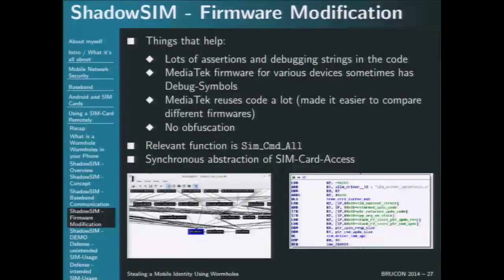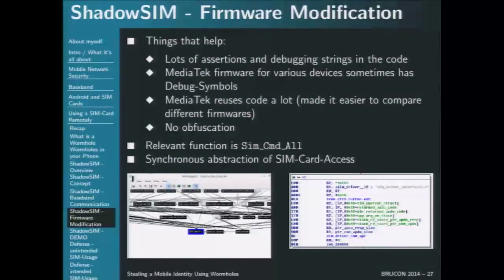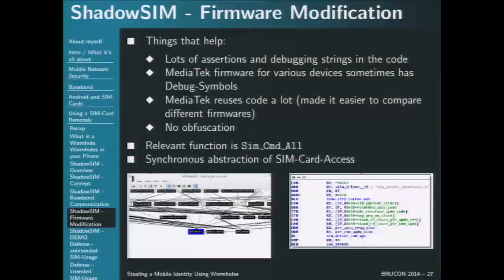Other things that helped with firmware modification: we disassembled the firmware and assembled the new function. The lots of assertions in the code show roughly what the code is doing. MediaTek reuses code across different device firmwares, so I looked up relevant functions in other devices and searched for the same opcodes in my firmware. The firmware is not obfuscated at all — it's plain ARM firmware. The key function is sim_cmd_call, used by nearly everything touching the mobile connection and easy to disassemble.